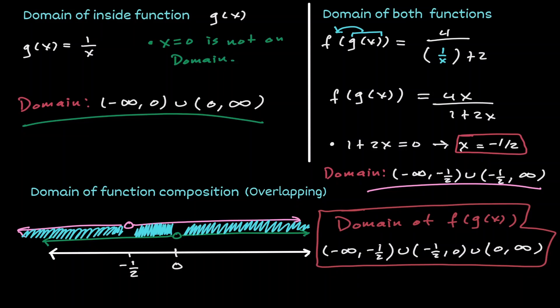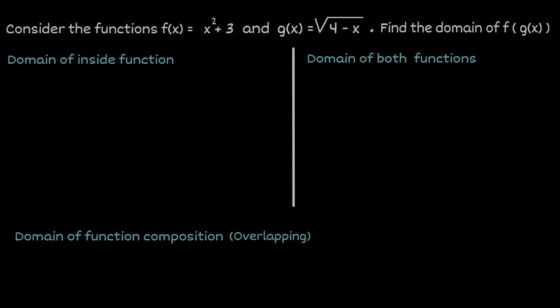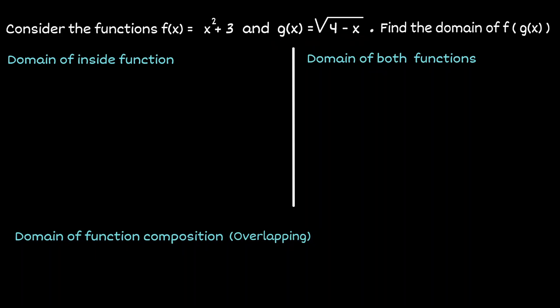Let's take a look at one more example. We have f(x) = x squared plus 3 and g(x) = the square root of (4 minus x). We want to find the domain of the composition of g inside of f — we take g(x) and substitute it inside f. So my inside function is g(x). Let's start by finding the domain of g(x).